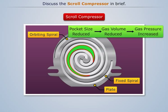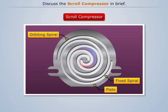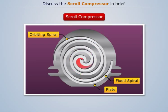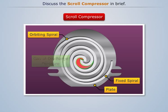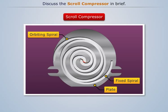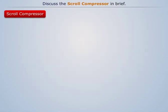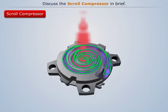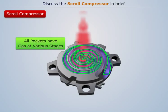This spiral inward movement reduces the volume of the gas present in the pocket, thereby increasing its pressure. Further movement of the orbiting scroll causes the gas to reach the center of the compressor, increasing its pressure to discharge pressure. The gas then gets discharged from the center of the compressor. This concludes the working of the scroll compressor. All pockets between the scrolls have gas in various stages of compression.